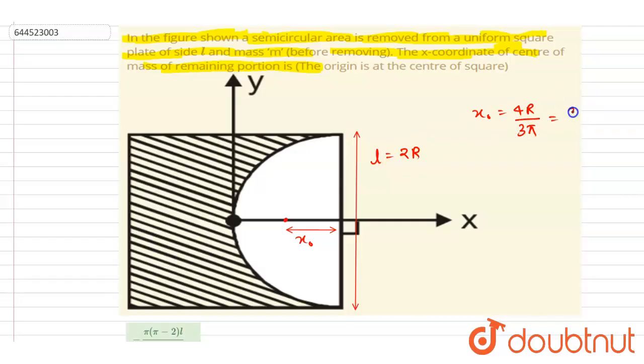Here the 2r equals l, so I can write down it is 2l by 3π. You can write down the x-coordinate as well because this whole distance is l by 2, so this distance will be l by 2 minus x₀.